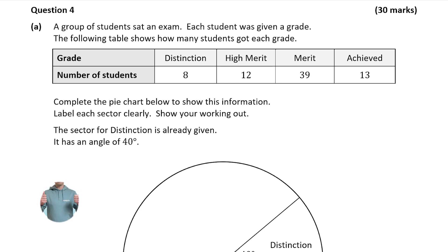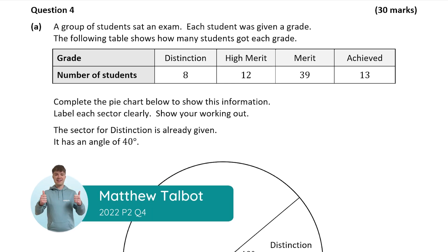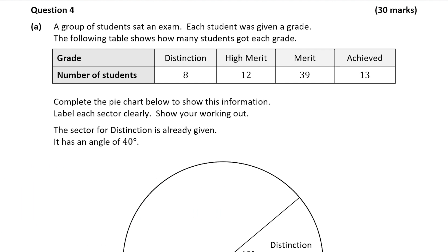Hello, it's Matthew here and we're looking at question 4, which is worth 30 marks. We're shown a table that shows how many students got each grade: distinction, higher merit, merit and achieved. We're then asked to complete the pie chart to show this information, and the sector for distinction has already been given.